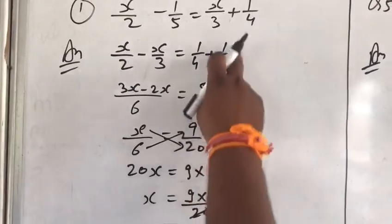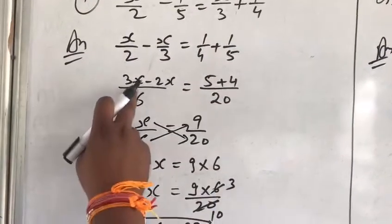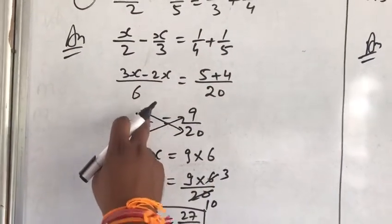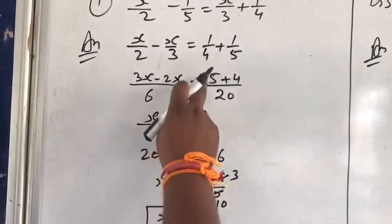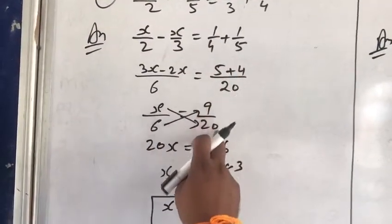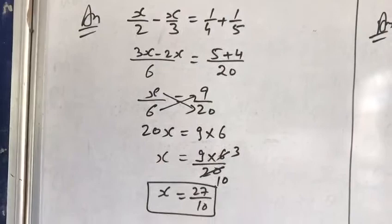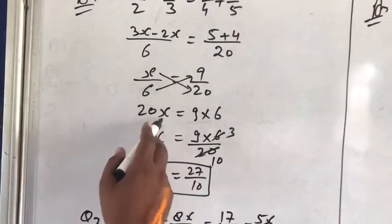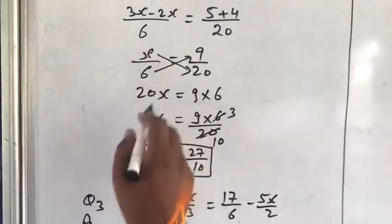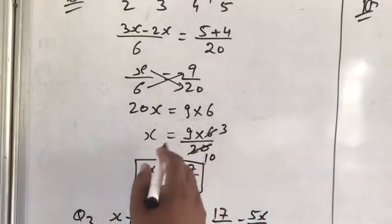Now 4 into 1 equal to 4. Now 3x minus 2x equal to x upon 6 equal to 5 plus 4 equal to 9 upon 20. By cross multiplication, x into 20 equal to 20x equal to 9 into 6. Then x equal to 9 into 6 upon 20.